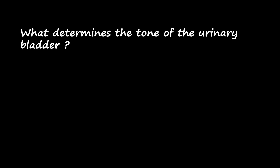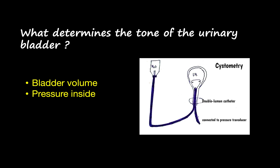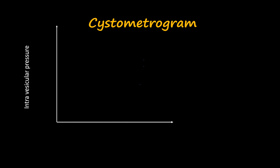What determines the tone of the urinary bladder? It is determined by the volume of urine in the bladder and the pressure created because of it. To measure this volume-pressure relationship, we use a technique called cystometry. We insert a double lumen catheter into the bladder, putting 50 ml of water each time and recording the pressure with a pressure transducer. This relationship between volume and pressure is known as the cystometrogram.